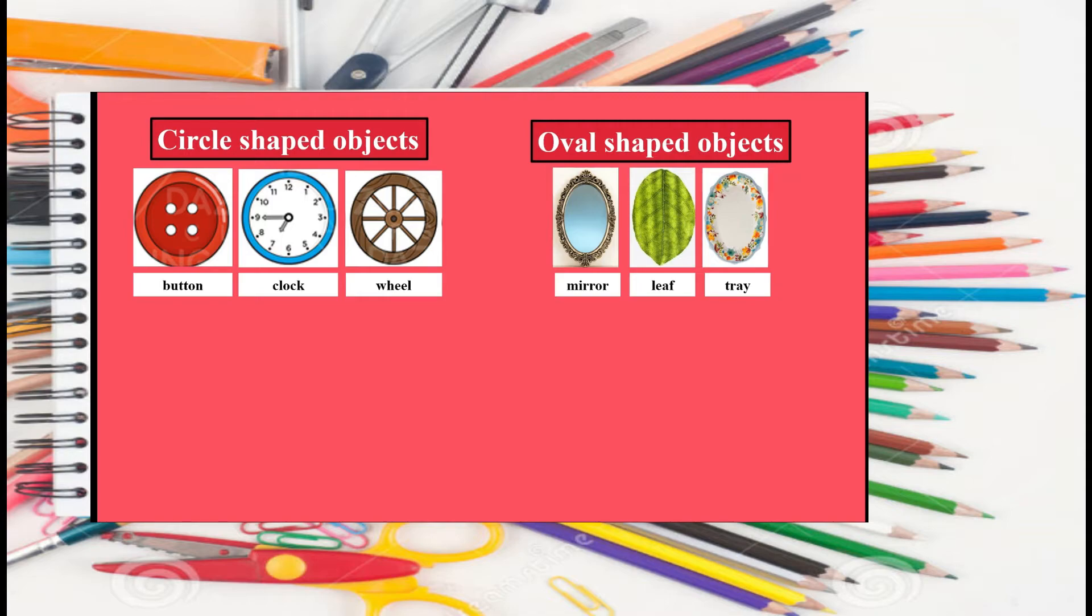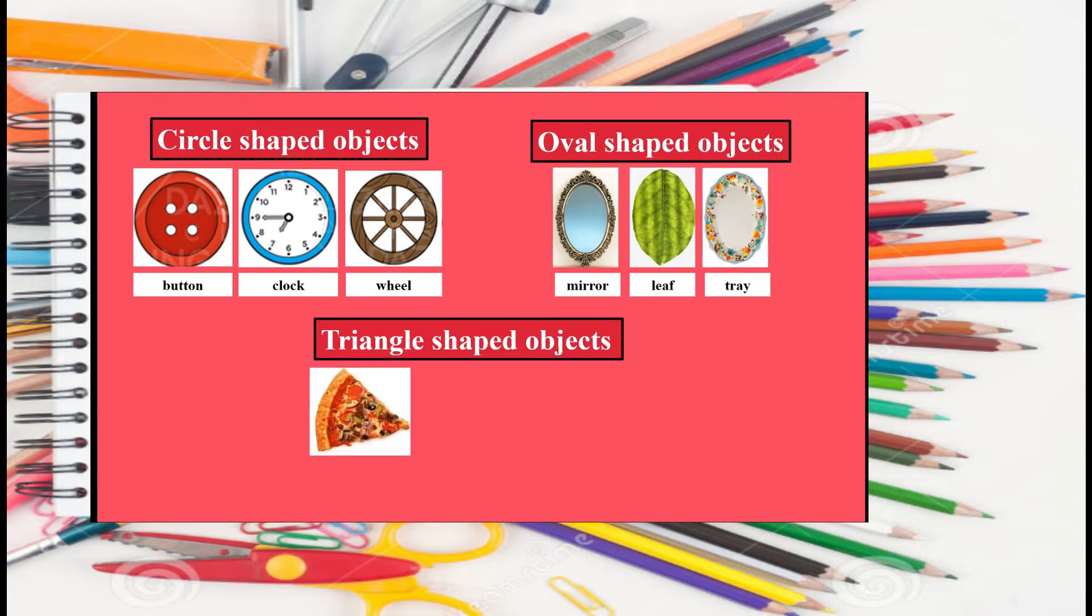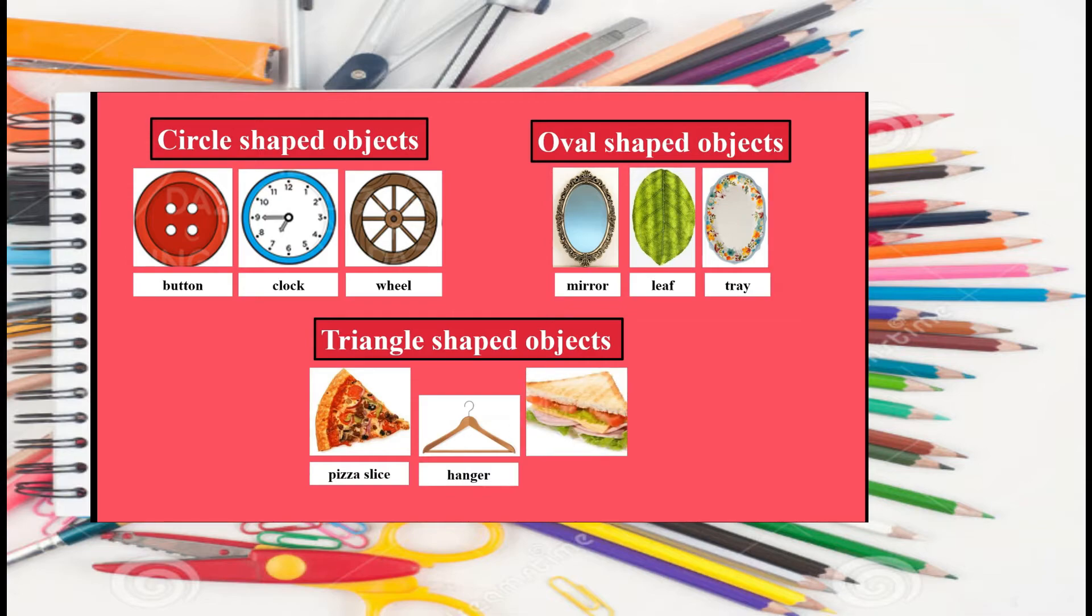Let's see the examples of triangle shaped objects. What is this? It's a pizza slice. Do you like it? Okay, I also like it. Now, what's this? It's a hanger. What's this? It's a sandwich.